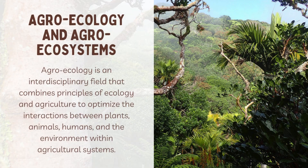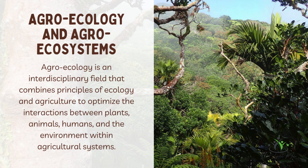Now let's look at agroecology and agricultural ecosystems. If you understand ecology and ecosystems, it becomes easier to understand agroecology and agroecosystems. Agroecology is the application of ecological principles to agricultural systems — it focuses on sustainable and holistic approaches to farming, considering the environmental, societal, and economic aspects.